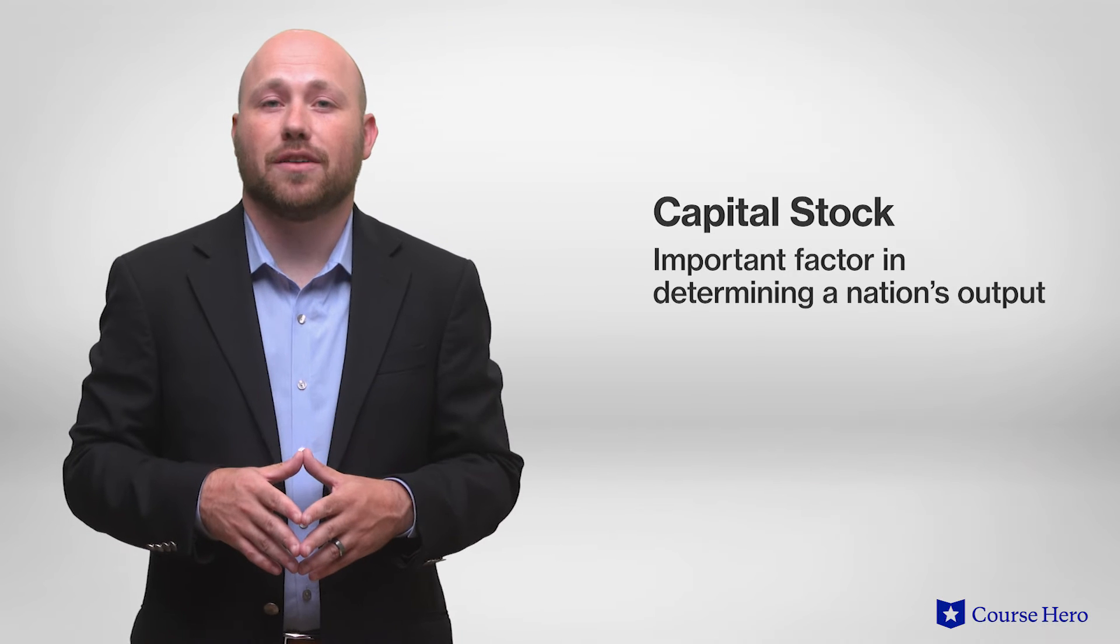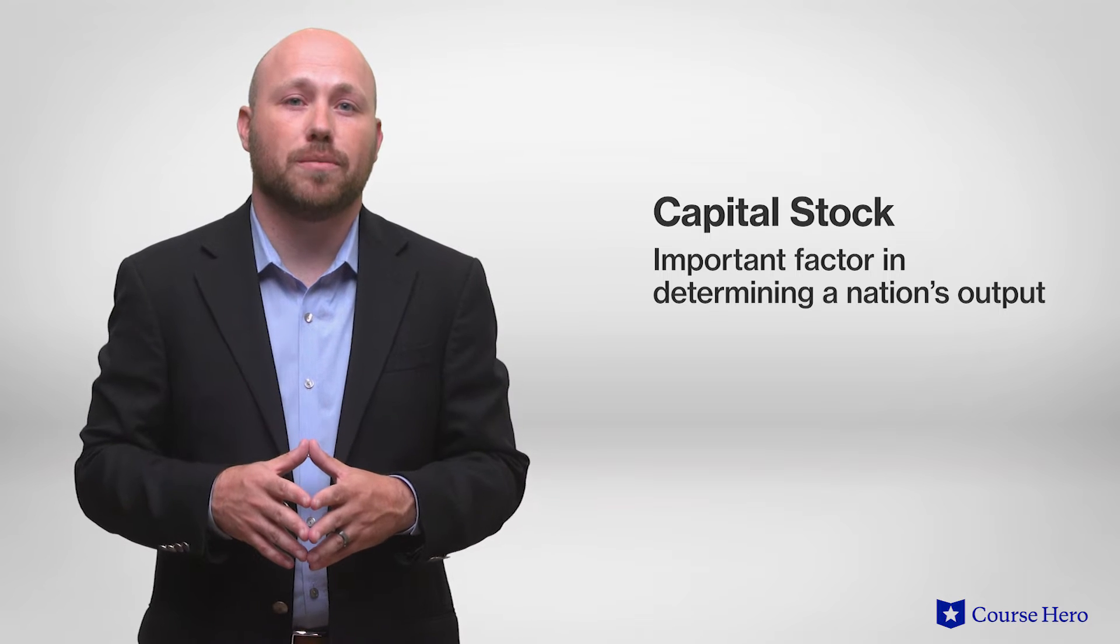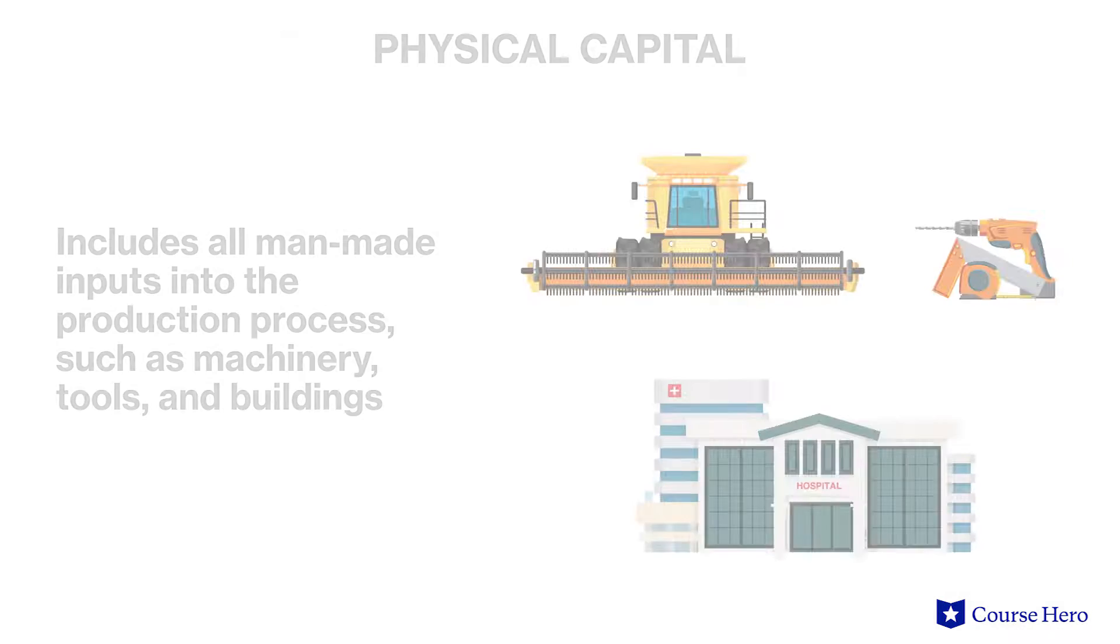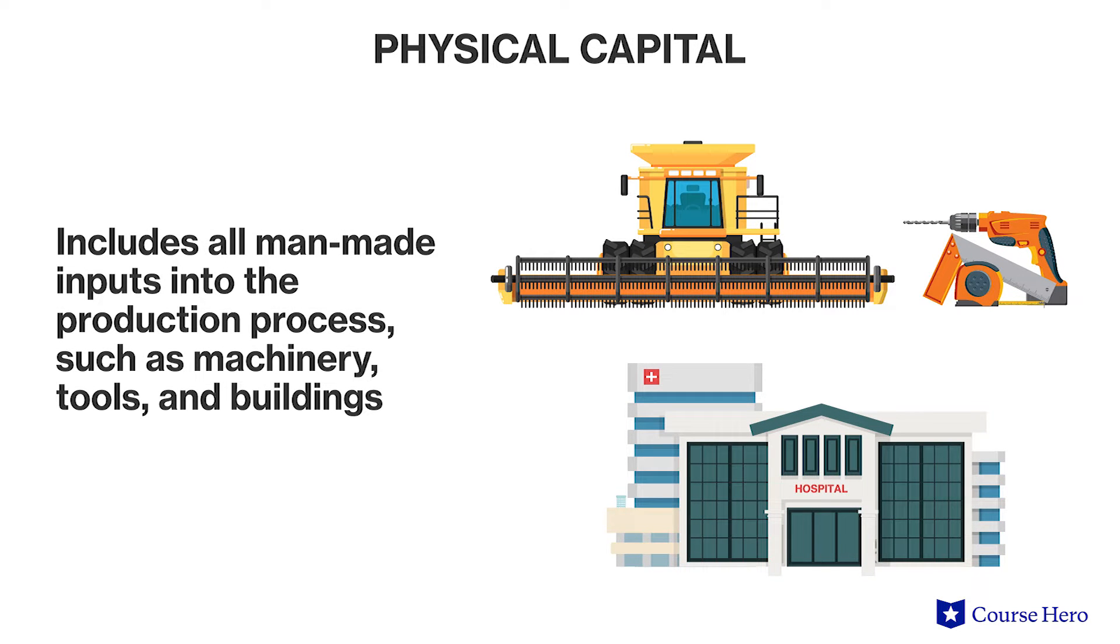The capital stock of a nation is an important factor in determining a nation's output and increasing it causes the nation's economy to grow. Physical capital includes all man-made inputs into the production process such as machinery, tools, and buildings. Having capital makes workers more productive.